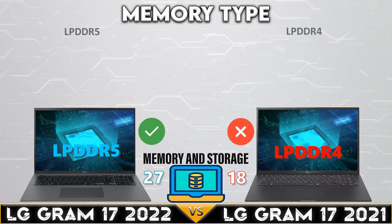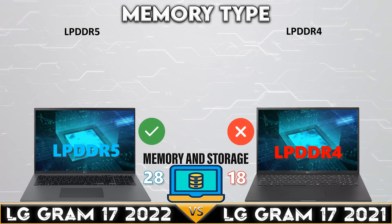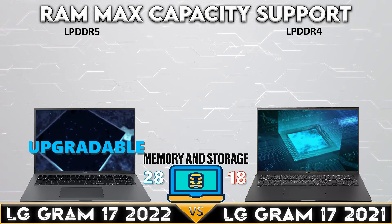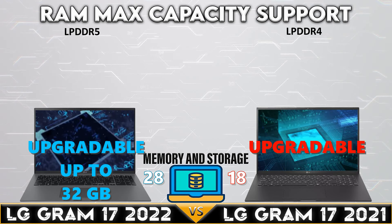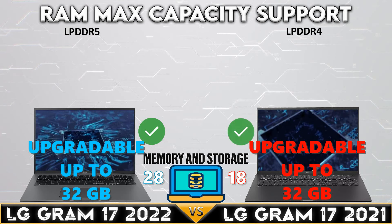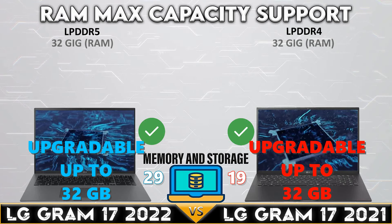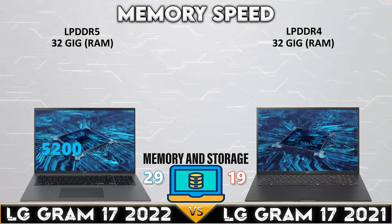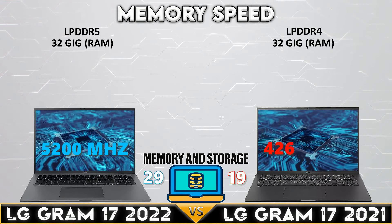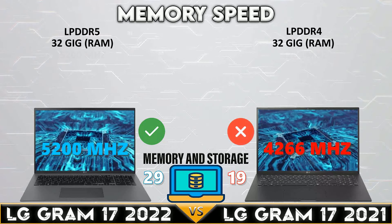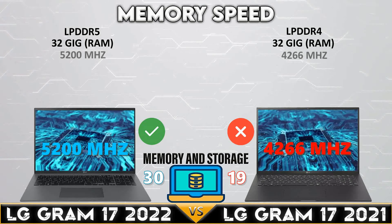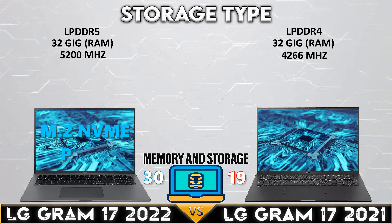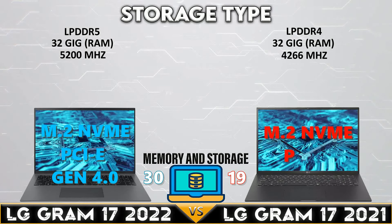The LG Gram 17 2022 supports LPDDR5 memory. Both devices are configurable for up to 32GB of memory, and the Gram 17 2022 has a 5200MHz memory speed.